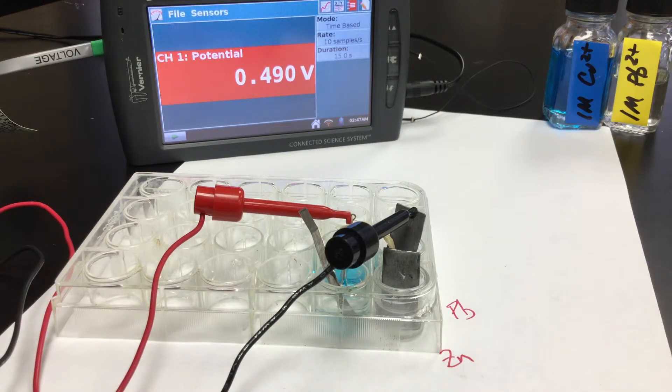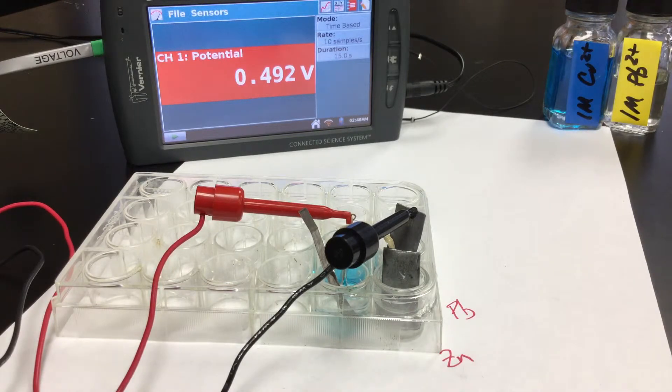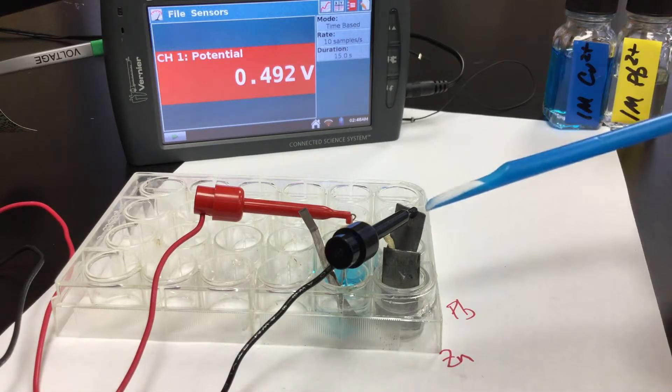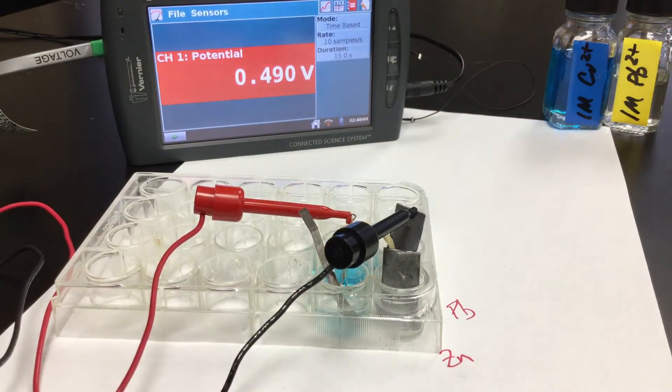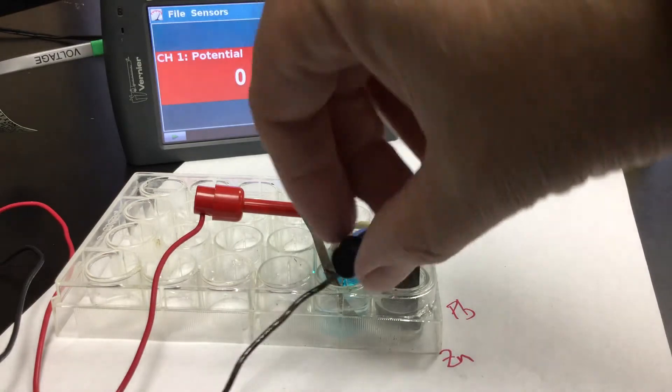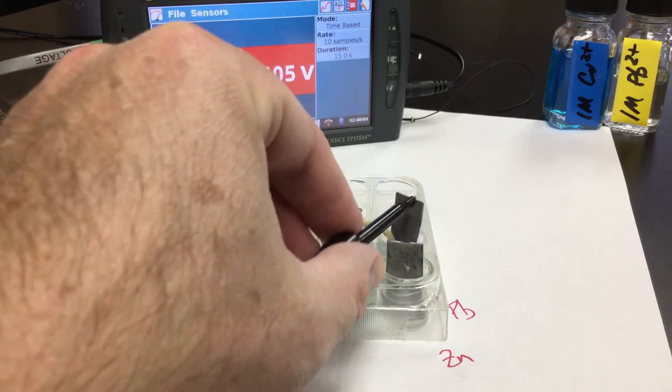And so what we want to notice is are we going to see a difference when we add some sodium chloride into it, into the lead cell. Alright, so let me grab a scoop and we'll add that in. So again, all we're looking for is is there a change by adding some sodium chloride into the lead cell. Mix that around.